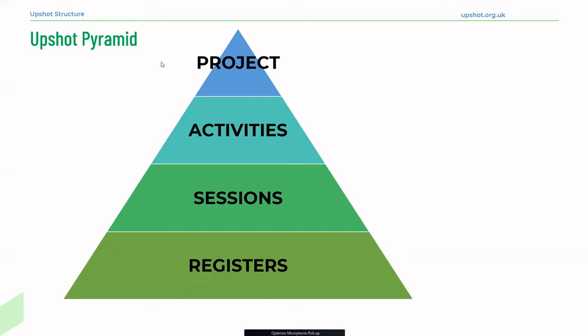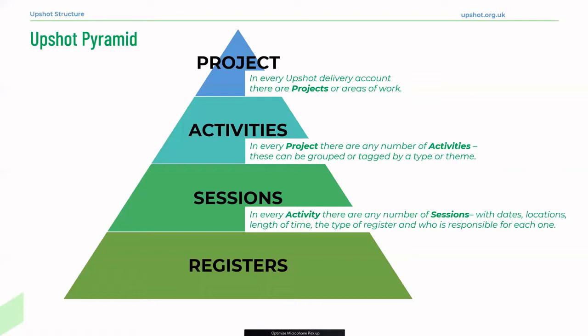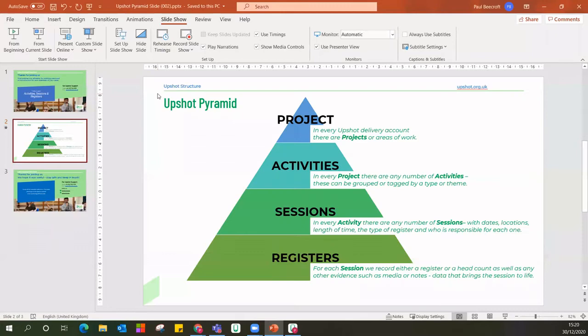If we look at projects: in every Upshot delivery account there are projects or areas of work. Within each particular project there are any number of activities, and at the activities level we can group these together or tag them by a type or theme. Within each activity there are any number of sessions with dates, locations, length of time, the type of register and who is responsible. At the bottom of our pyramid, for each session we record either a register or a headcount, and we can also add evidence such as media or notes — all the data that brings the session to life.